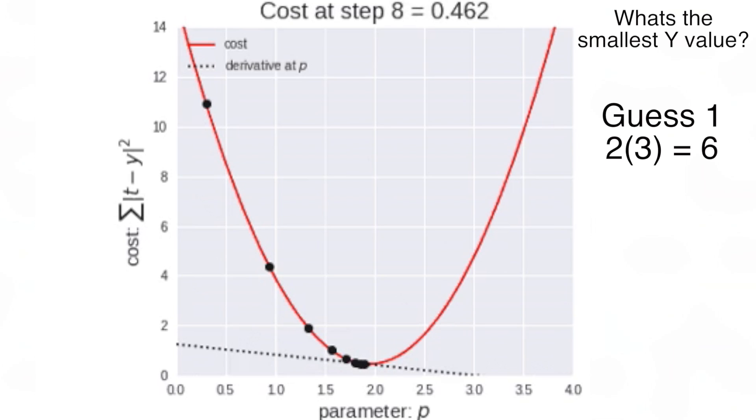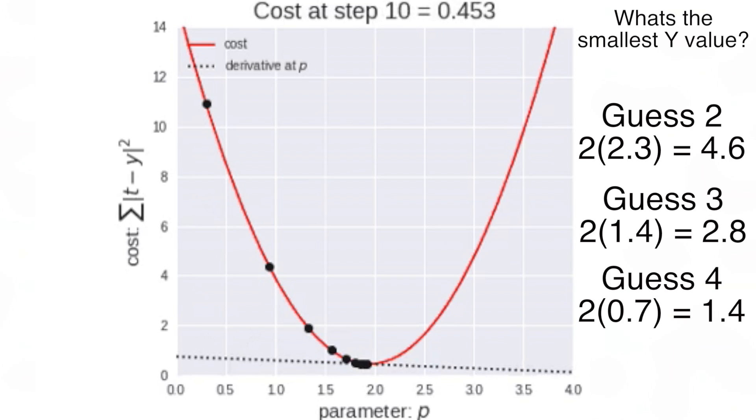So we could first guess 3, then take a baby step in the direction opposite of the gradient at x equals 3, which is negative 6. Then the next guess might be 2.3, then 1.4, then 0.7, until we finally reach 0, which is the local minimum. Both we and the machine can see that this is the optimal solution, since we can follow the trail of optimization visually and mathematically as it leads us to convergence.